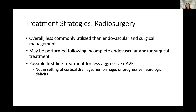Finally, there is the option for radiosurgery. Overall, this is a less commonly used approach than endovascular or surgical management. Sometimes it's used as follow-up if a previous strategy was not effective. Some clinicians describe it as a first-line treatment for less aggressive dural AV fistulas, but it's not appropriate for lesions that have cortical drainage, hemorrhage, or progressive deficits.